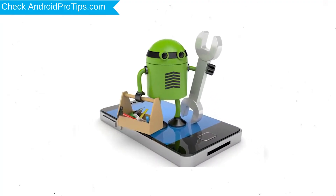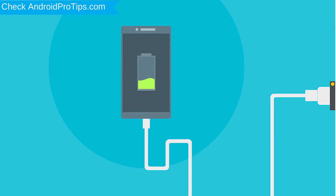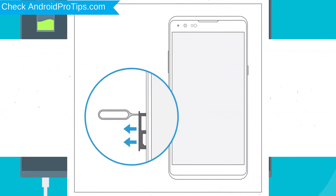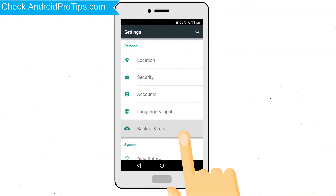Before resetting your mobile, your battery must be above 50%. Remove SD cards and SIMs, and back up your Android mobile data if possible.